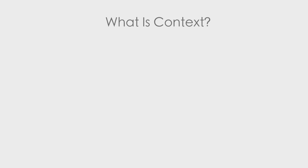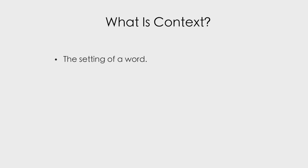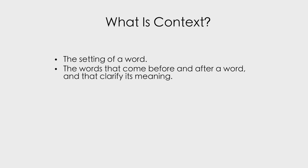Another thing we should check because it's really going to help us is context. Context is the setting of a word — the words that come before and after it that clarify its meaning. This will help us because if we're a bit confused about what the anagram could be representing, we can imagine a blank space where that word is and think about what makes sense with the sentence.